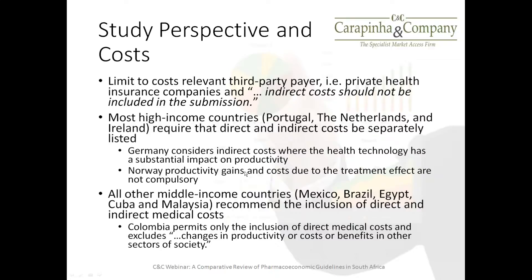All middle-income countries — Mexico, Brazil, Egypt, Cuba, and Malaysia — recommend the inclusion of both direct and indirect medical costs. In Colombia, changes in productivity or costs or benefits in other sectors of society should be included. So here is an important difference: South Africa does not recommend the inclusion of indirect costs, contrary to what is happening in both high-income and middle-income countries.